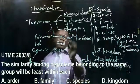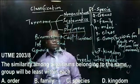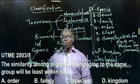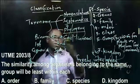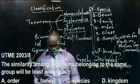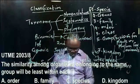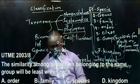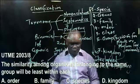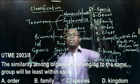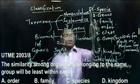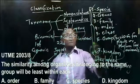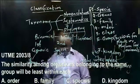Phylogeny involves the classification or grouping of organisms based on their ancestral origin or ancestral descent. So we can now answer: the similarity among organisms belonging to the same group will be least within kingdom, but will be greatest within the species. As you move from species down to kingdom, similarity gradually decreases; moving from kingdom up to species, similarity increases.